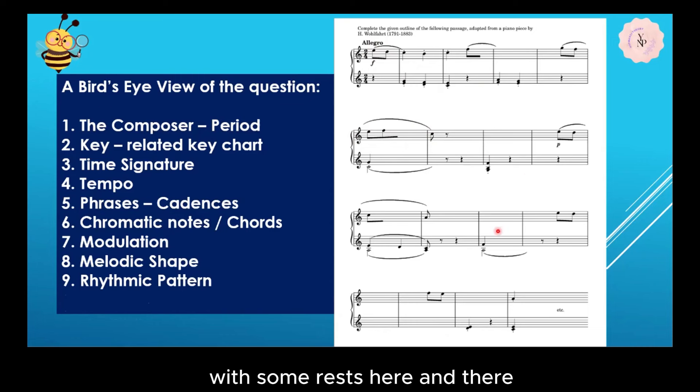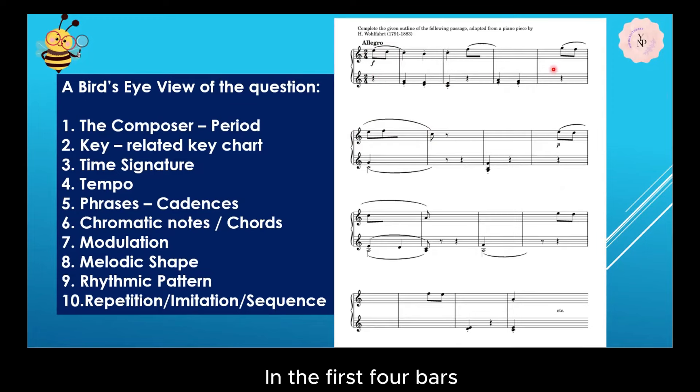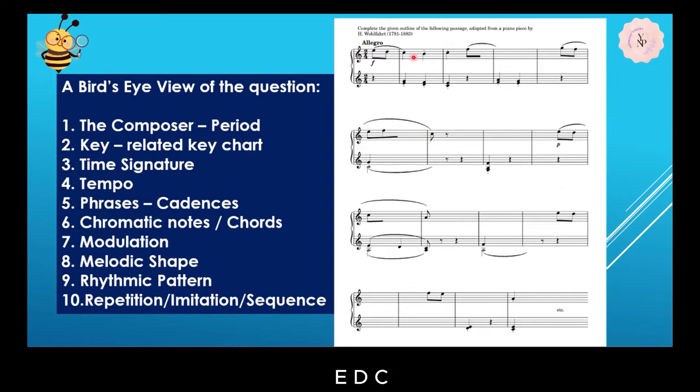Then finally we will observe repetition, imitation, or sequence. In the first four bars, we can see there will be a sequence here: E D C B C, and the next quaver starts with F. This prompts us to move these few notes one step higher, and it all works well with the left hand also. From here is one step higher than bar one, so we can assume there is a sequence.